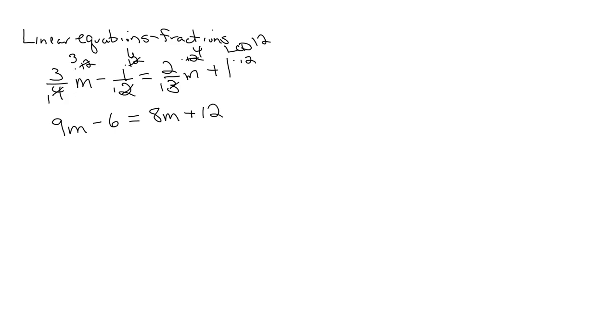Next step, subtract 8m. Get your variables together. Please note, I got rid of the fraction, which is exactly what you want to do. So I have m minus 6 equals 12. Add 6 to both sides. And m equals 18.